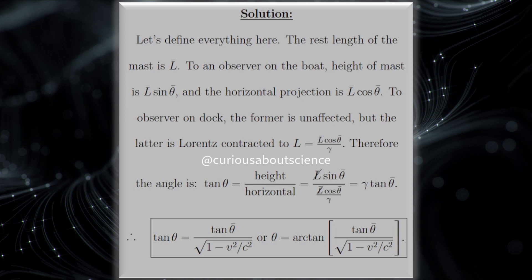Again, we're using the bar notation here for theta, L, theta, and L, because those are on the thing that is moving. Some books call it proper. It's the same thing. But, to the observer on the dock, the former is unaffected, but the latter is Lorentz-contracted to L equal L bar cosine theta bar over gamma.